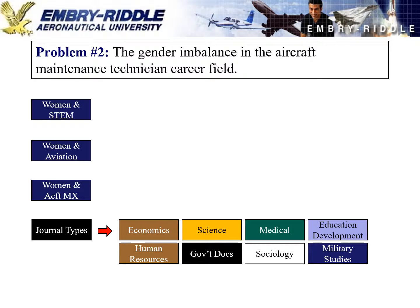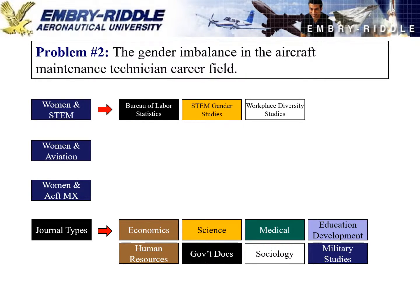For this example, we'll delve into economic, science, medical, education, human resources, government documents, sociology, and military studies journals. When looking at women in STEM, I can look in government documents for Bureau of Labor Statistics data on how many women are in STEM fields, science journals for studies on gender diversity in STEM, education journals, and sociology journals on workplace diversity and perceptions of women's distribution across fields.